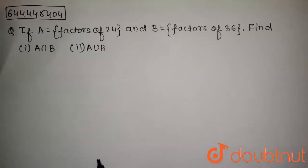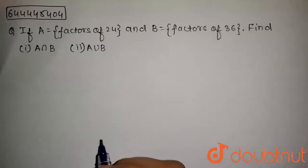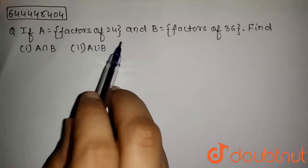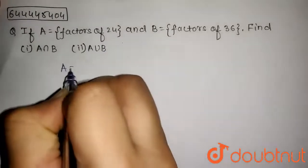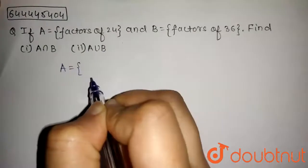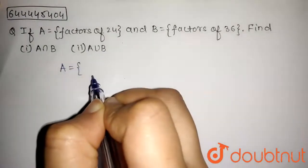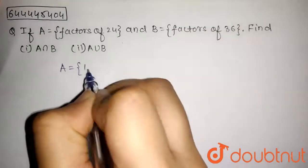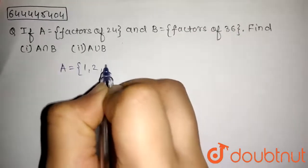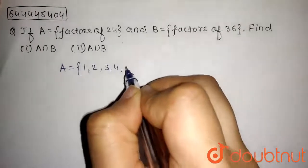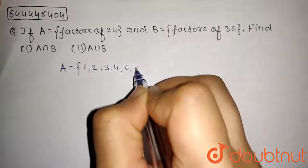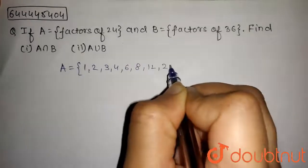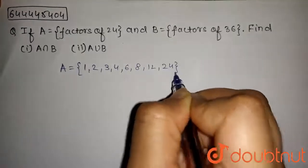We have given that A is a set of factors of 24. So A in roster form will be: A contains 1, 2, 3, 4, 6, 8, 12 and 24.